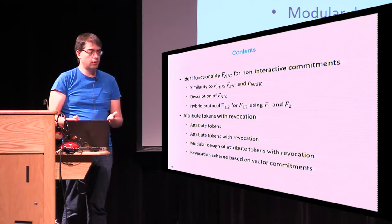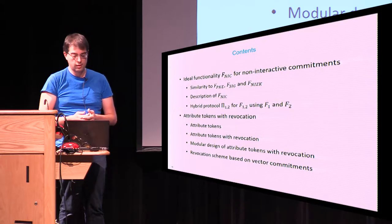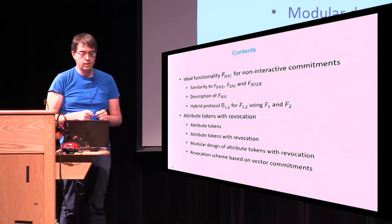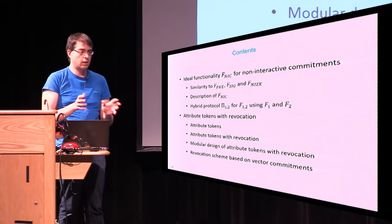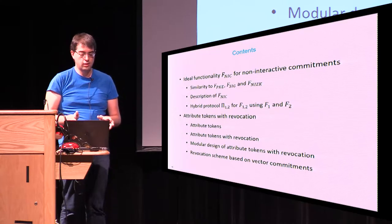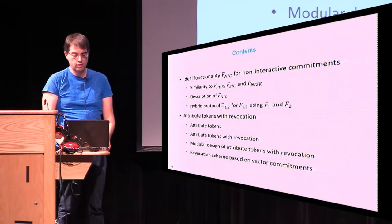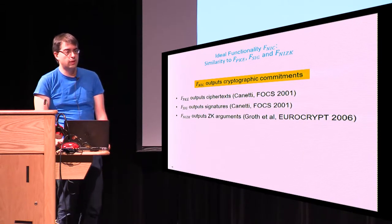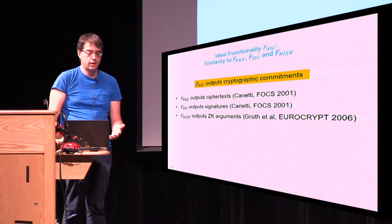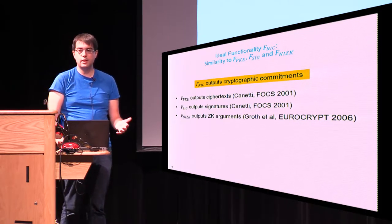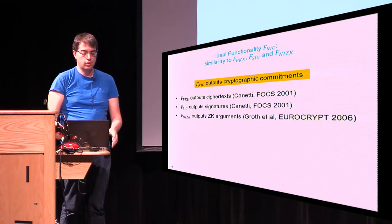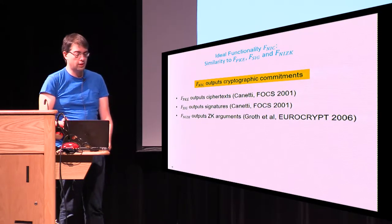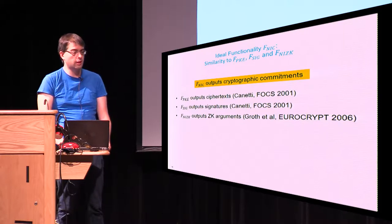What we are going to do in this talk is to fix this problem by proposing an ideal functionality for commitments in the UC framework that actually outputs cryptographic commitments. We will show how to design a protocol for our toy example using this functionality. In the second part, we will discuss how to design modularly attribute tokens with revocation, separating the tasks of attribute tokens and revocation, and we will also present a new revocation scheme.